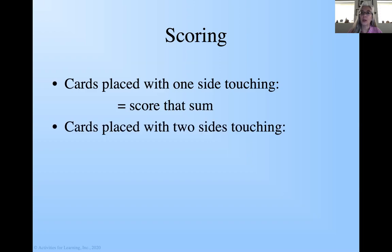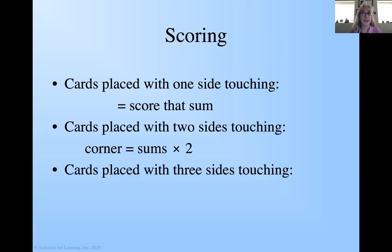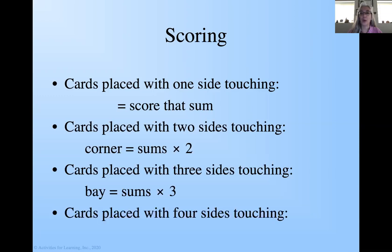Now here's where it gets different. Cards placed with two sides touching, which we call a corner, is the sum times two. So corners have a lot more value. So what do you think happens when we have three sides touching? We call it a bay, and it's the sum times three. So we can see how the scoring has become very important here.